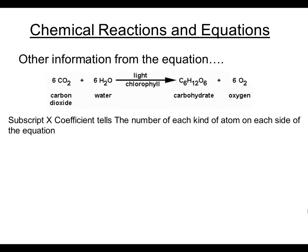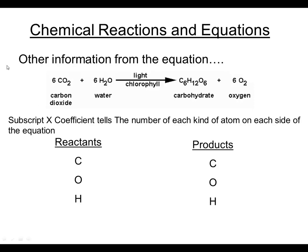If you take the subscript in each chemical formula and multiply it by the coefficient for the number of molecules in that substance, that will tell you the number of each kind of atom on each side of the equation. For carbon on the reactant side, each carbon dioxide molecule has one carbon atom. Multiplying that by the coefficient six gives six atoms of carbon on the reactant side.